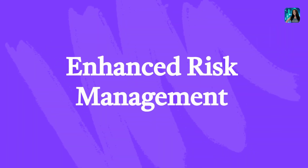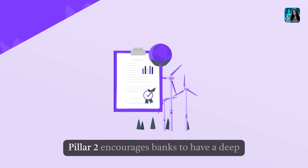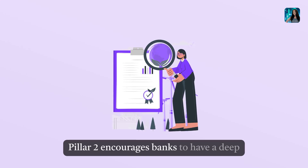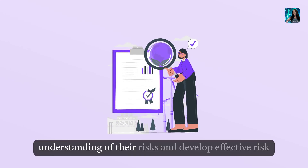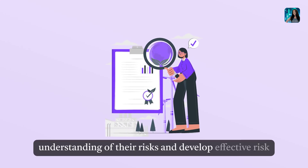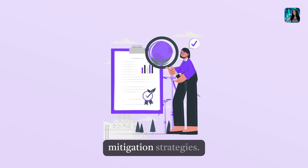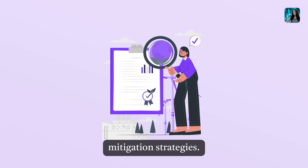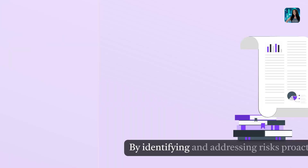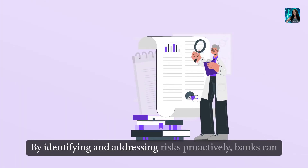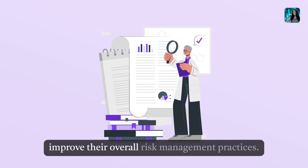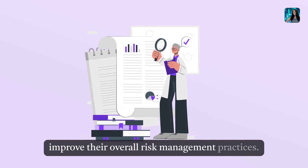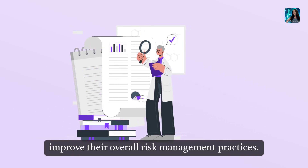Enhanced Risk Management. Pillar 2 encourages banks to have a deep understanding of their risks and develop effective risk mitigation strategies. By identifying and addressing risks proactively, banks can improve their overall risk management practices.